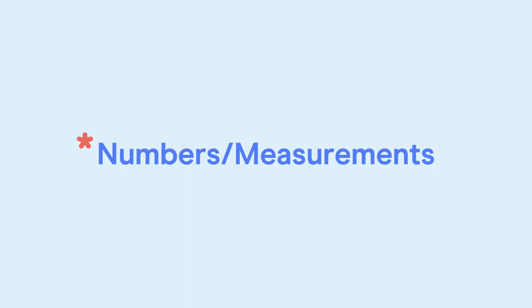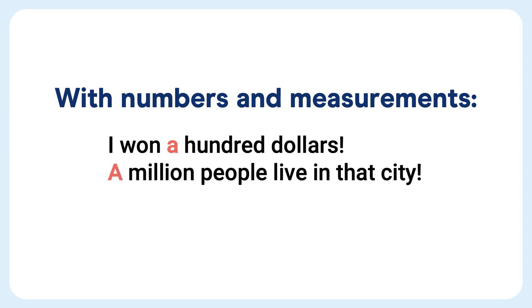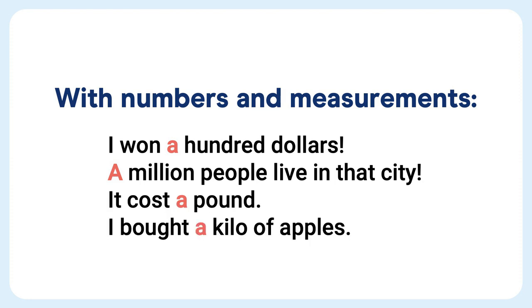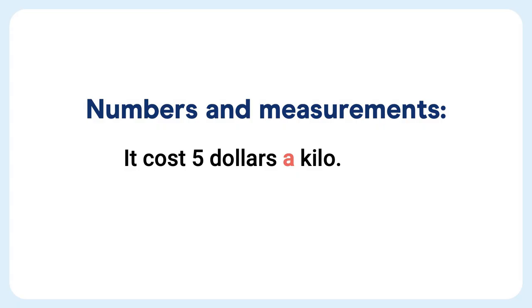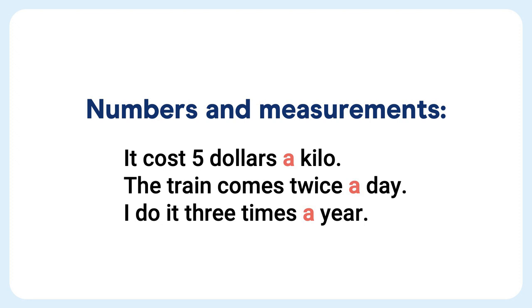The next one is pretty similar but a bit more abstract — numbers and measurements. 'I won $100.' 'A million people live in that city.' 'It cost a pound.' 'I bought a kilo of apples.' We use 'a' or 'an' instead of 'one.' It can be a little different with measurements: 'It cost $5 a kilo,' 'the train comes twice a day,' 'I do it three times a year.' In this case, 'a' is replacing the word 'per,' like 'I do it three times per year.'